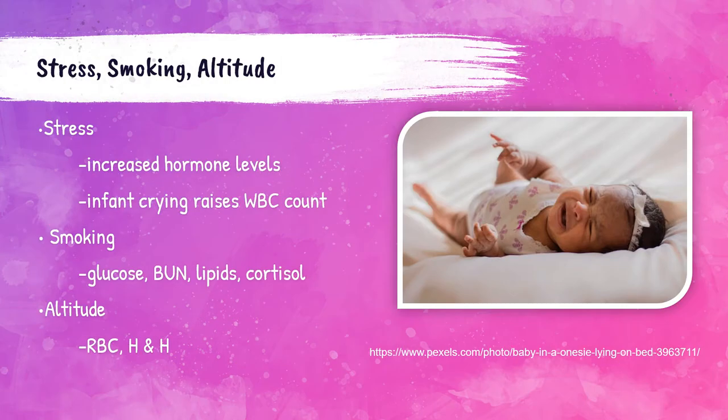Stress can also increase hormone levels like cortisol and ACTH, which stands for adrenocorticotropic hormone. When babies are crying, their white blood cell count may also raise. As a phlebotomist, it's important to try to calm a scared or apprehensive patient, especially when these levels are being tested. If the patient is a smoker, this can also affect certain laboratory values like glucose, lipid panels, cortisol, and BUN.